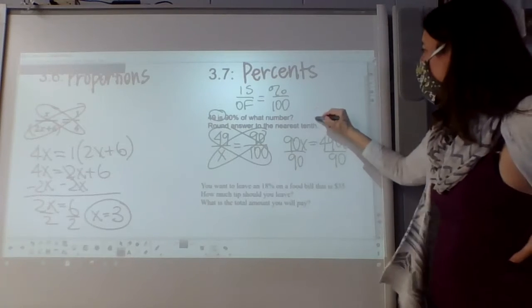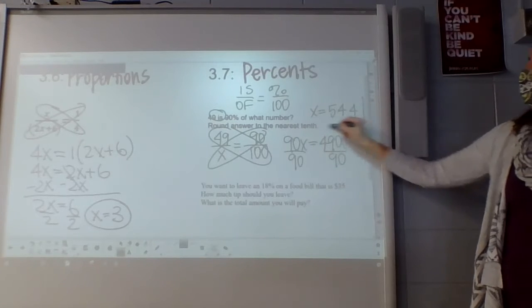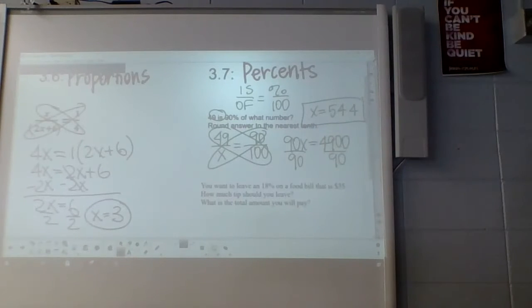Does it keep repeating? Yeah, 54, the tenth place would be 4, because the 4 tells us just to leave it at that point. If you're rounding up, it would be 5 or more. So 54.4.